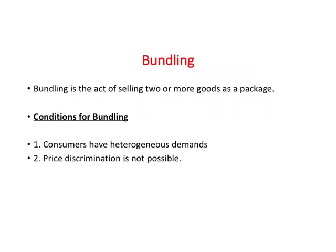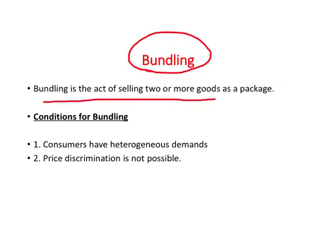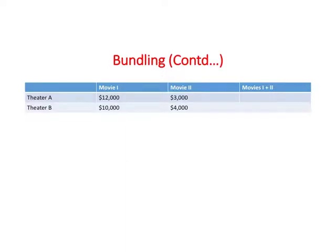Another way a monopolist can make more money is through bundling — selling two or more products as a package, such as a toothpaste bundled with a toothbrush. Two conditions are required: consumers have demand for heterogeneous products, and price discrimination is not possible.